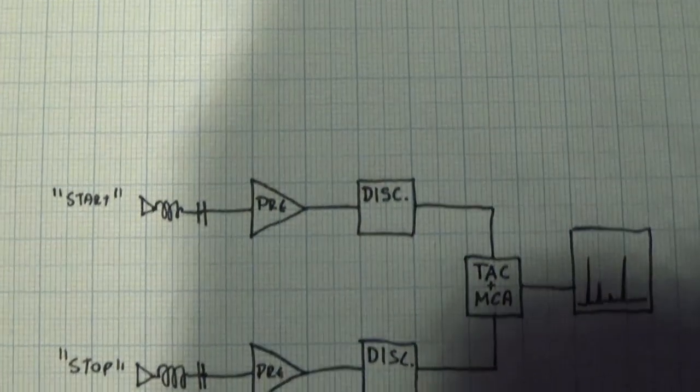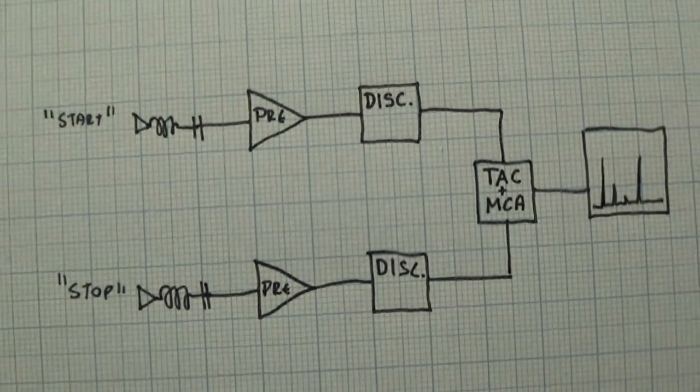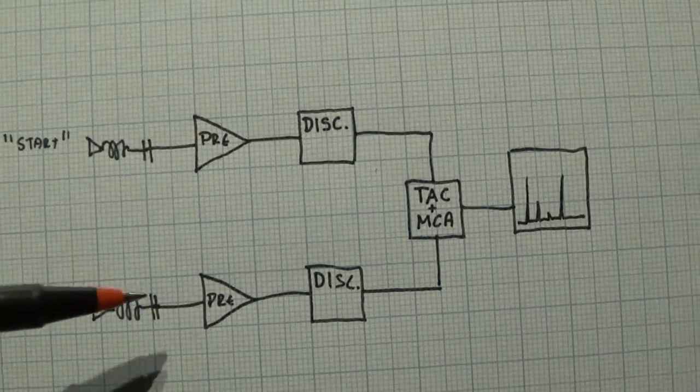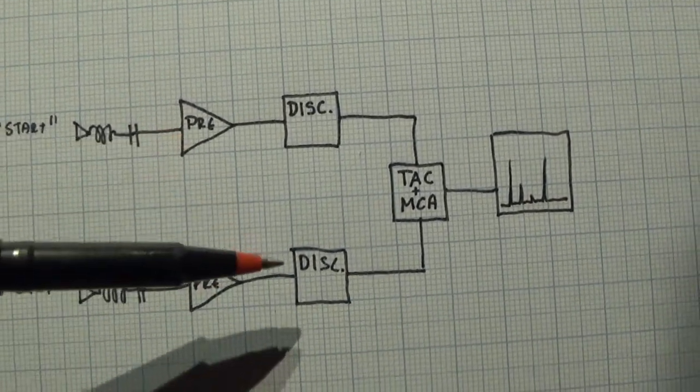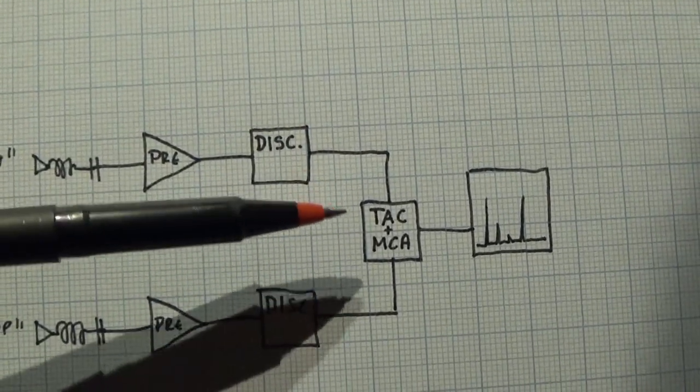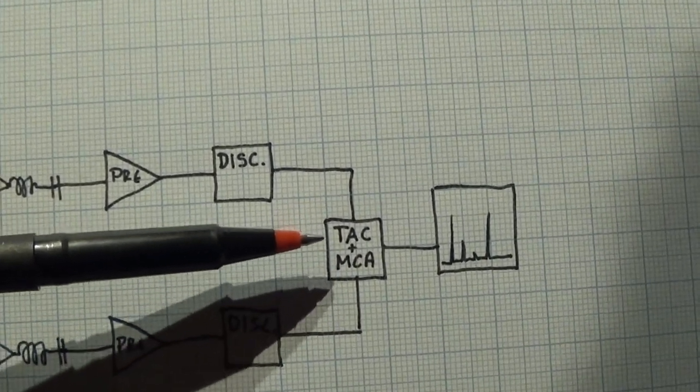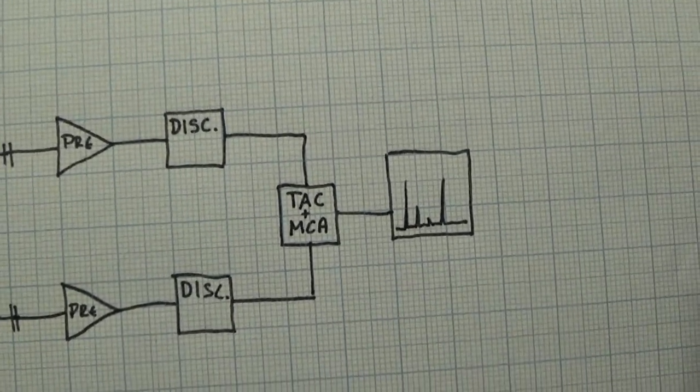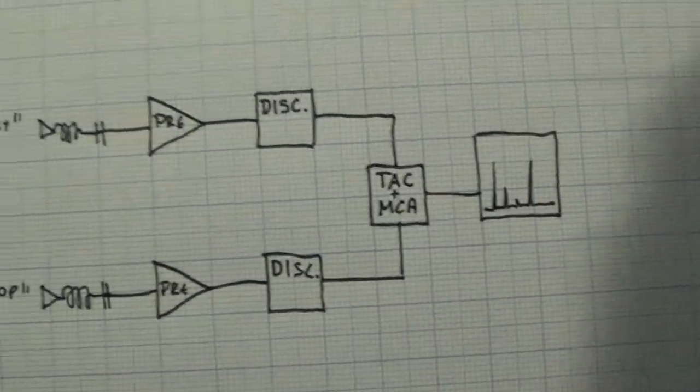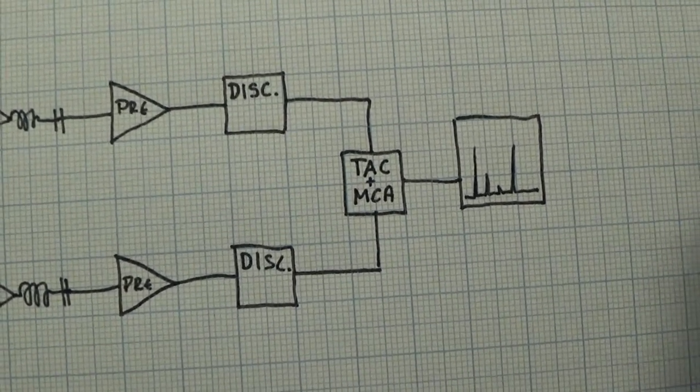So basically we need to be able to time particles and measure the time between two pulses. And the way you do that in particle physics is like this. This is the basic principle. You have our two channeltrons. I've omitted the bias supplies. We have preamplifiers. We then have two discriminators that sets a baseline for noise. And then basically we just get the start and the stop pulse into what's called a time-to-amplitude converter, which basically just, as the name suggests, converts the time differential to a pulse height. And then we just use a normal multi-channel analyzer, as you would for gamma spectroscopy, to display this in a spectrum. Couldn't be simpler.